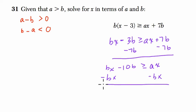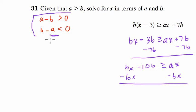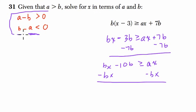And this might help us. This idea before here that b minus a is negative. Oops. That might be viable now. So we have negative 10b is greater than or equal to ax minus bx. And what's the common factor here? Well, x is the common factor. So you have x times a minus b.